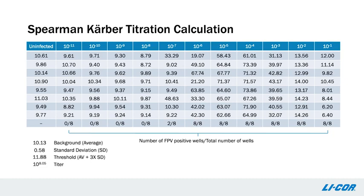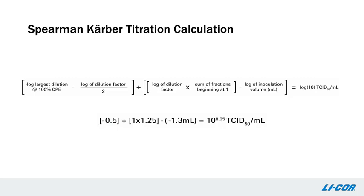The titer was then calculated using the Spearman-Carber equation. The largest dilution with 100% CPE was 10 to the minus 6. The dilution factor is 10 and the sum of the fractions beginning at 1 is 1.25. The inoculation volume is 0.1 mL. Therefore, the titer is calculated as 10 to the 8.05 TCID50.